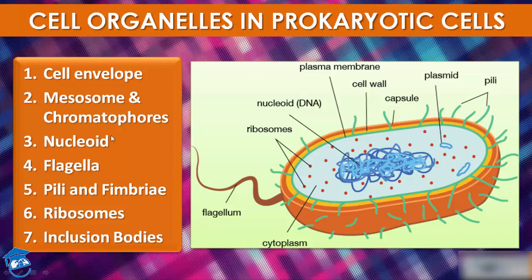So the seven things we will study in prokaryotes are: cell envelope, mesosome or chromatophores, nucleoid, flagella, pili and fimbriae, ribosomes, and inclusion bodies.